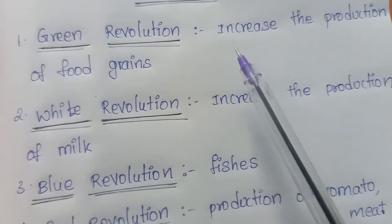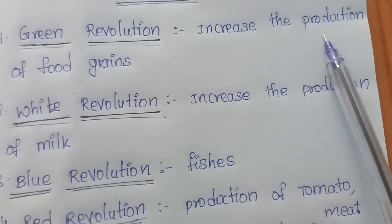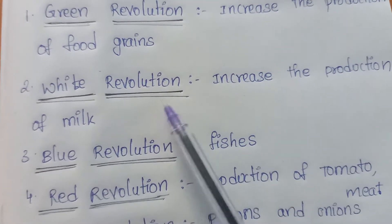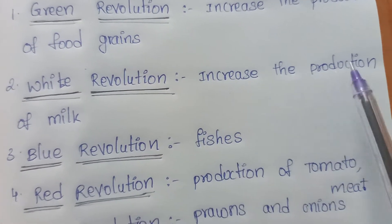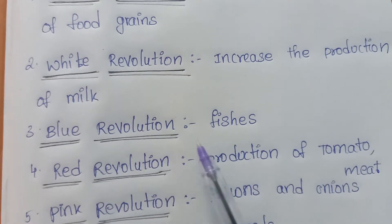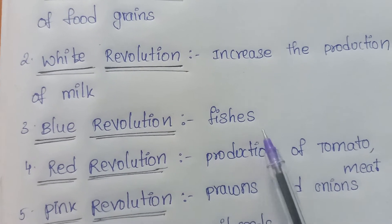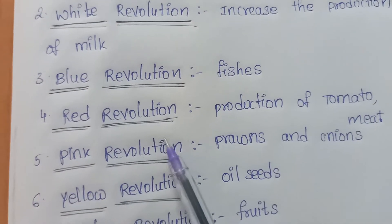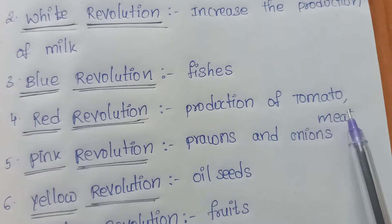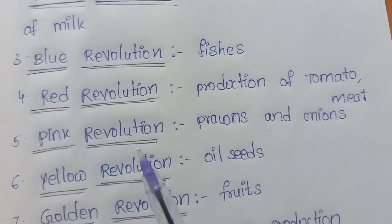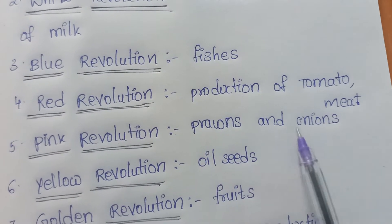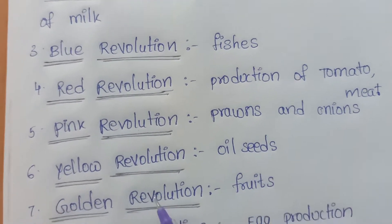Green revolution is related to the increase in production of food grains. White revolution is related to the increase in production of milk. Blue revolution is related to fishes. Red revolution is related to the production of tomato and meat. Pink revolution is related to prawns and onions.